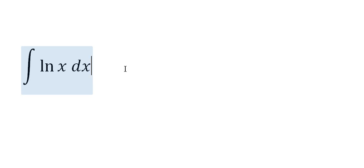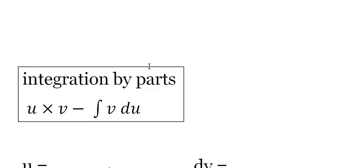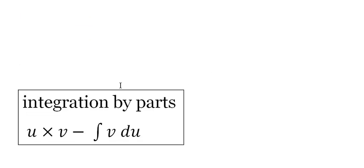That's why for this particular integrand, you're going to have to do integration by parts. Integration by parts is very simple. It's u times v minus the antiderivative of v du.